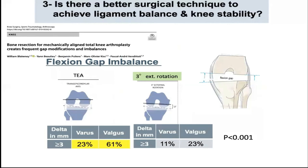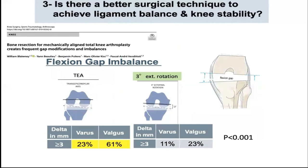However, the lateral compartment behaves differently. The same study simulating the mechanical alignment bone resections for flexion space found that using the trans-epicondylar axis or systematic three degrees of external rotation were linked to significant flexion gap imbalances of more than 3 mm in up to 60% of varus knees.